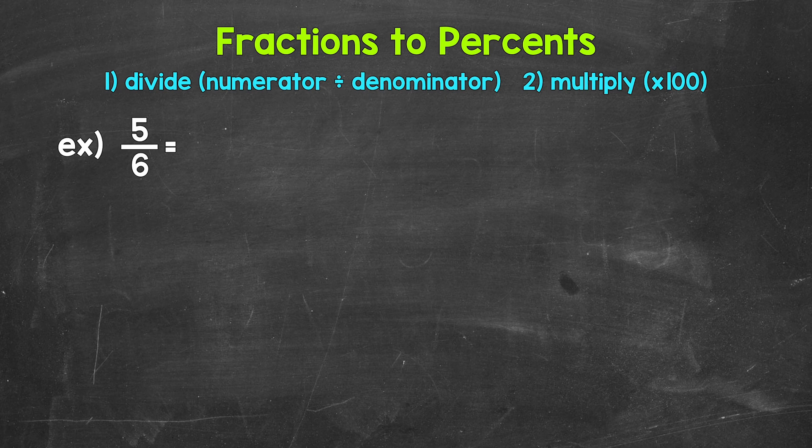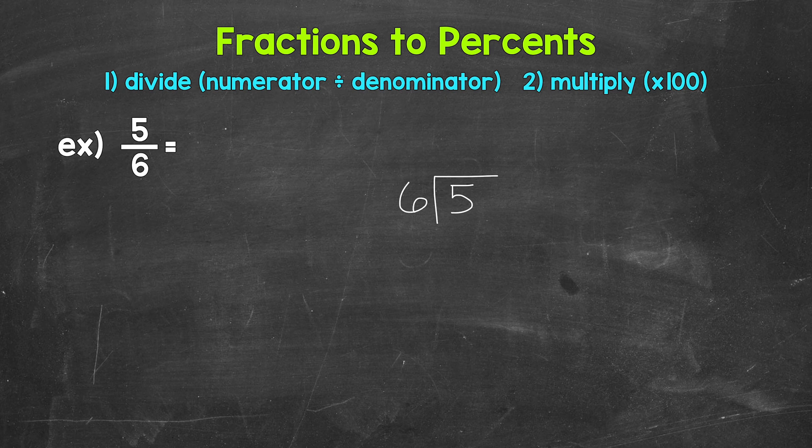So we need to start by converting this to a decimal by dividing. For 5 sixths, we can set this up as 5 divided by 6. We have 5 divided by 6, but we can't do that with whole groups, so we need to use a decimal and a zero in order to work through this. We need to bring the decimal straight up into where the quotient, the answer, will be.